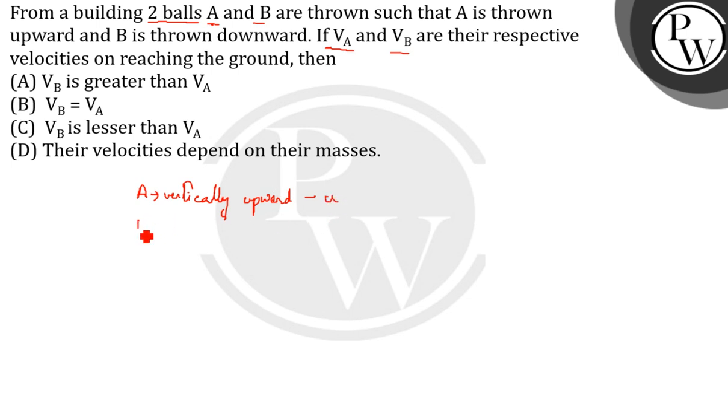Ball B is thrown vertically downward with the same speed u. After reaching the highest point, ball A will come back to its point of projection with the same speed in the downward direction.